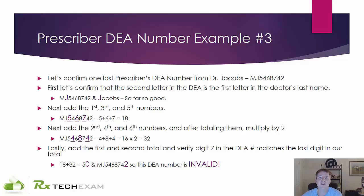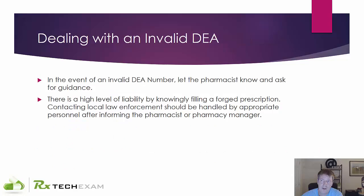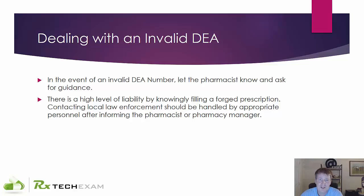So what do we do when we have an invalid DEA? You're going to have to notify your pharmacist on duty or pharmacist in charge if they're available. If the DEA is invalid, the prescription is invalid — mistakes like that just don't exist. Chances of finding this at some point in your career are probably pretty slim. The fact is, this information isn't some well-kept secret. If you Google how to check a DEA number, it's going to come up — people prepare for the PTCB exam and put the information out there.